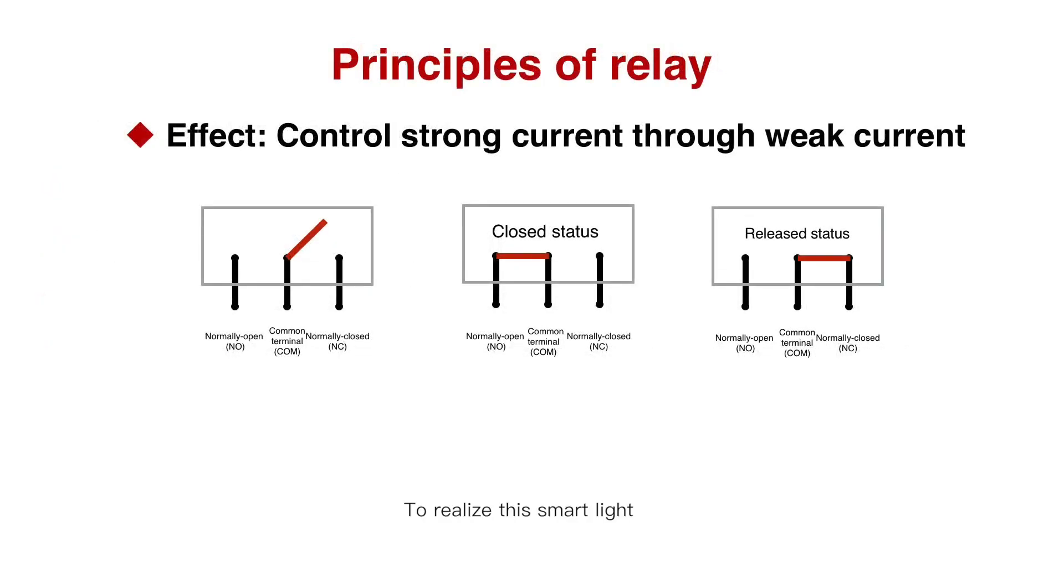To realize the smart light, in fact, the most crucial part for us is to control this electric light with the relay. Well, as for the relay control, one of its capacities is to control strong current through weak current.